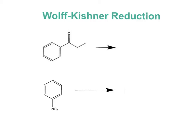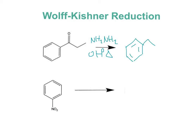The Wolff-Kishner reduction is a method to reduce aryl ketones to alkylbenzenes using hydrazine (NH2NH2) and a strong base OH⁻ with heat. In this reduction, the carbonyl is cleaved off, leaving just the alkyl group.